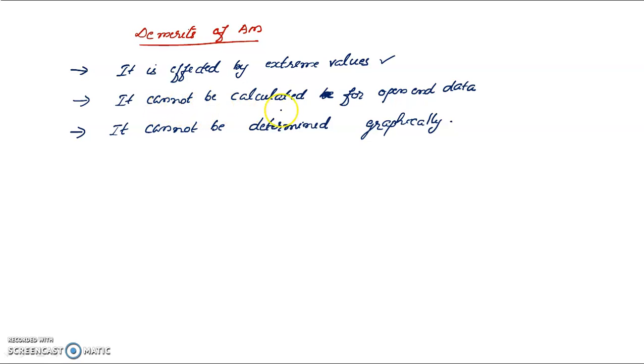Another demerit is that the arithmetic mean cannot be calculated for open-end data, where one of the classes has no defined boundary.